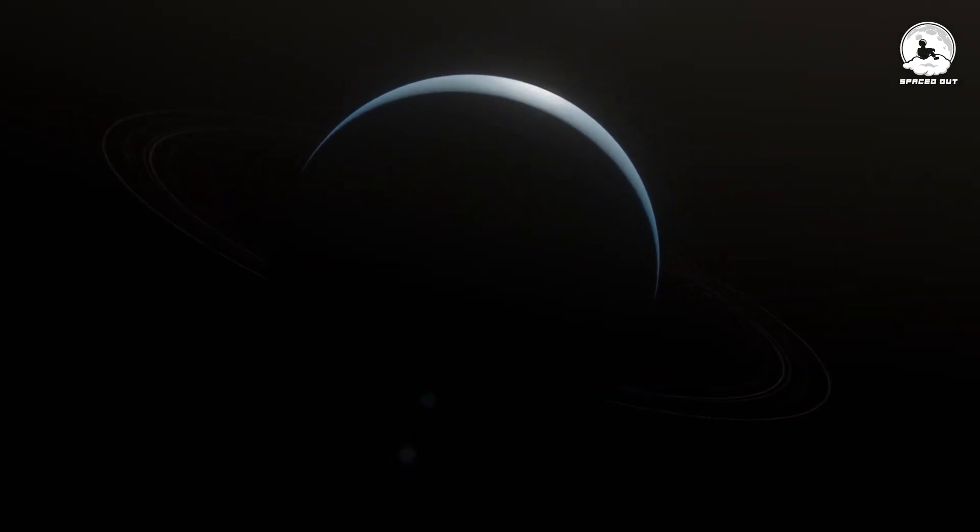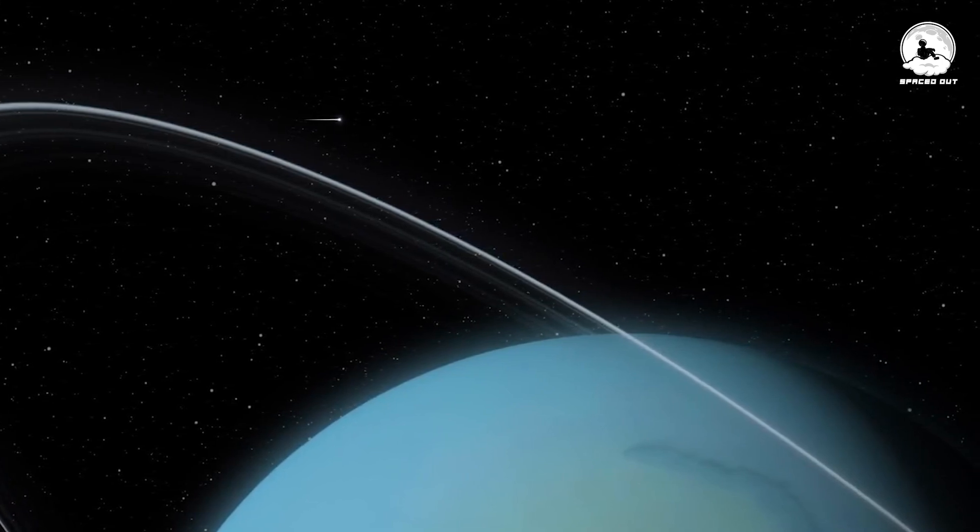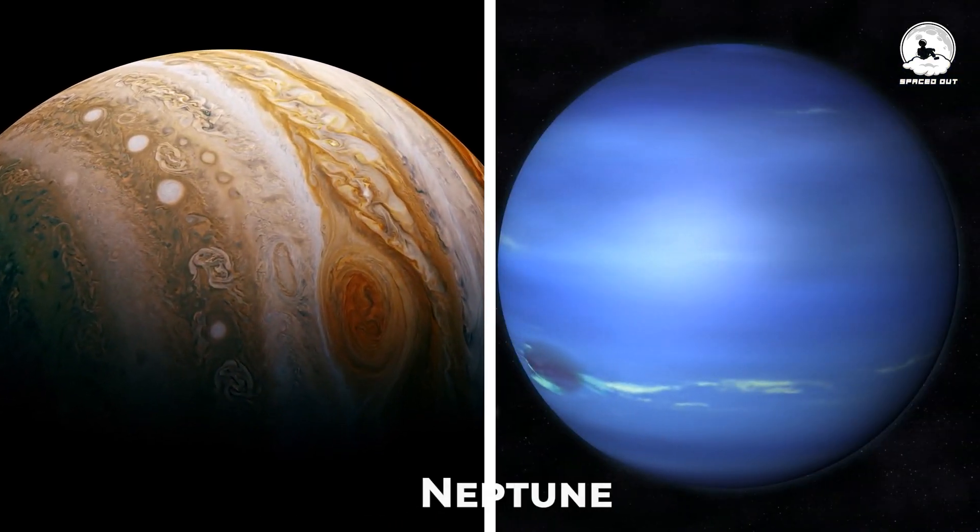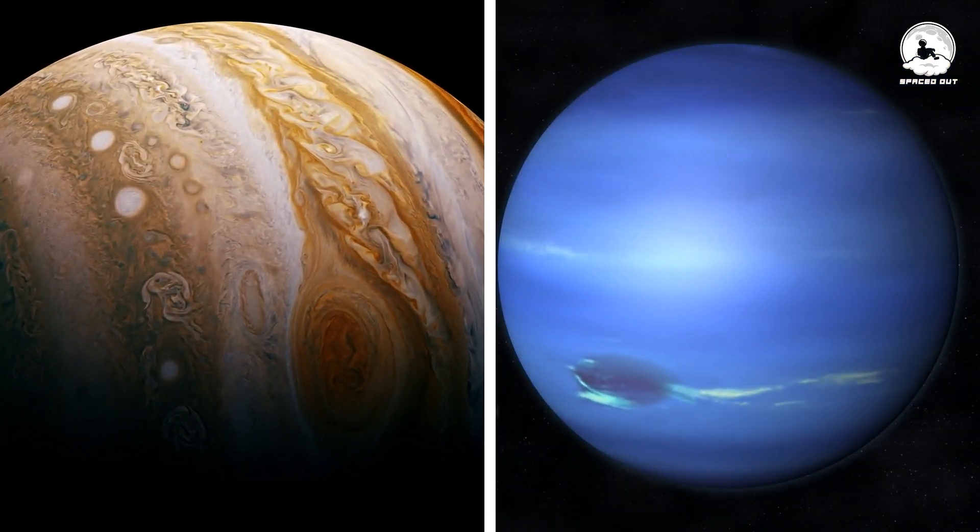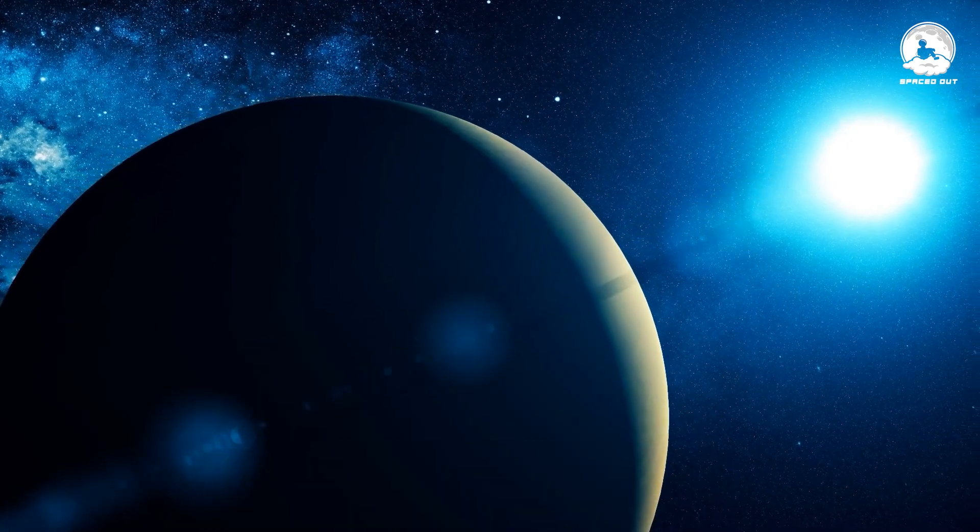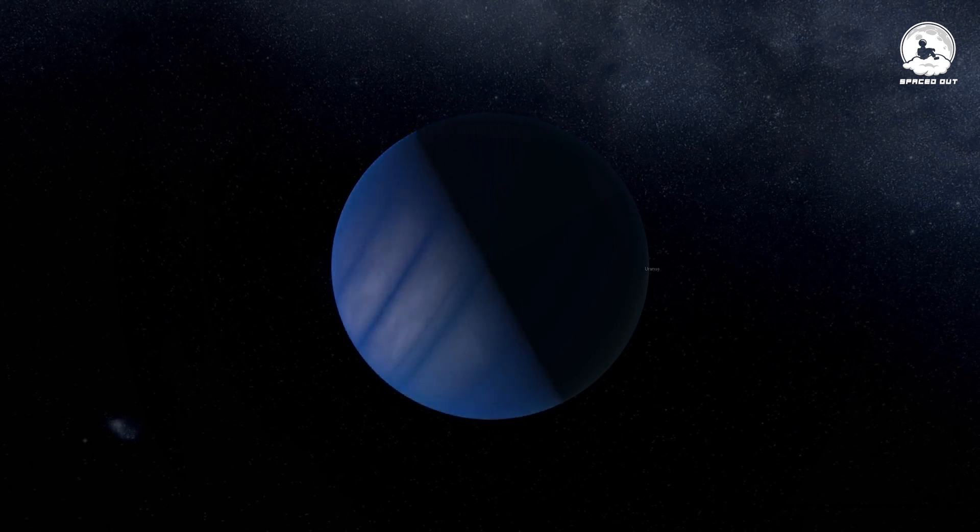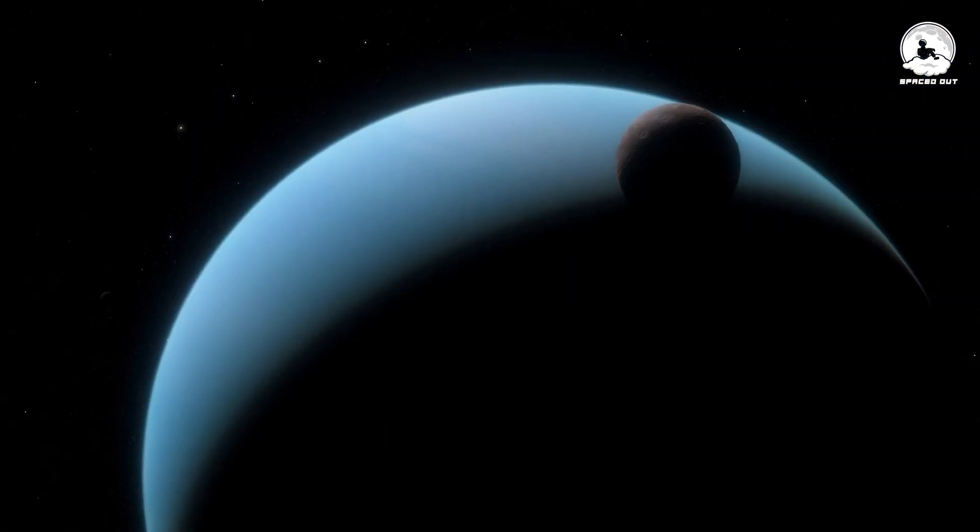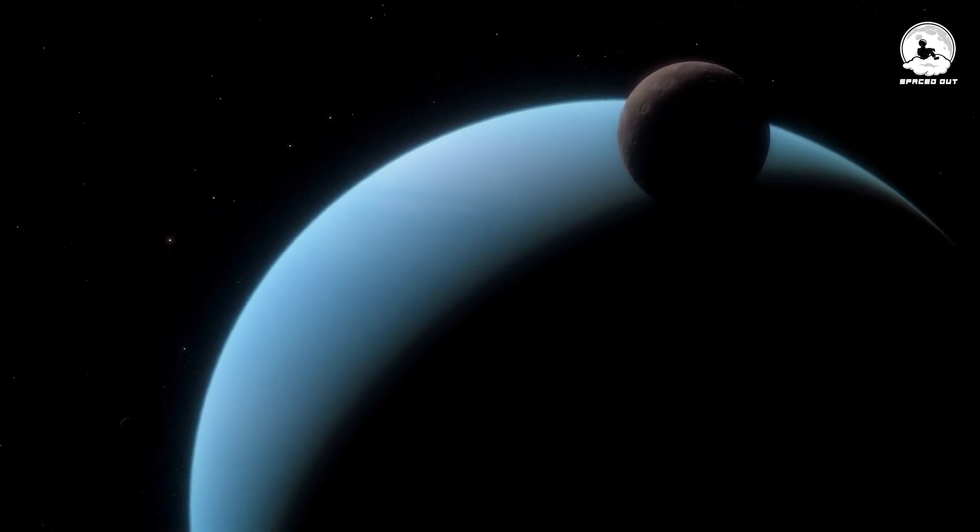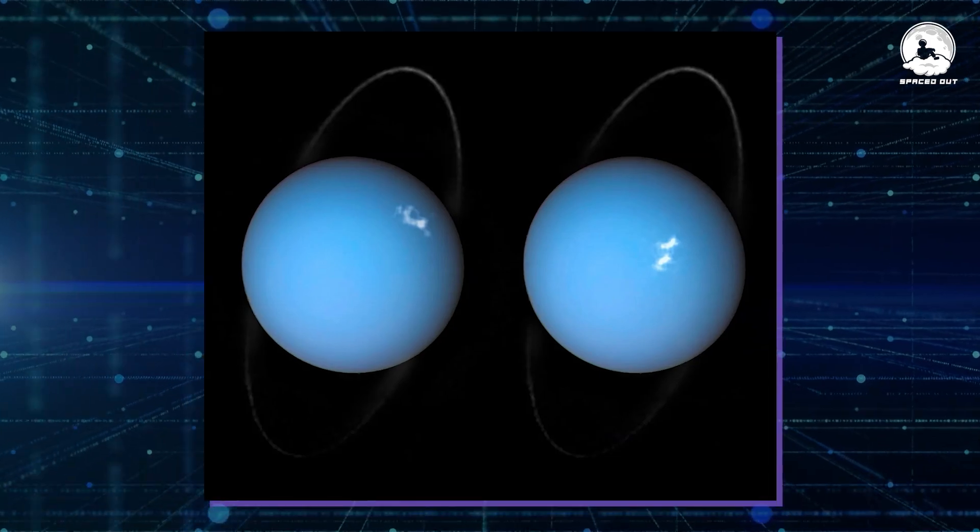Uranus, despite its considerable distance from the Sun, turns out to be warmer than anticipated. This puzzle isn't exclusive to Uranus, as fellow gas giants Jupiter and Neptune also share this temperature mystery. According to the typical model of solar heating, planets should get colder the further they are from the Sun. However, Uranus and its gas giant counterparts don't conform to this expectation. This leads to the burning question: where does this extra warmth come from? An intriguing theory proposes that the source of this unexpected heat might be Uranus's auroras.